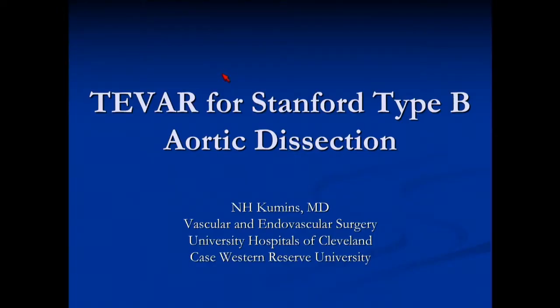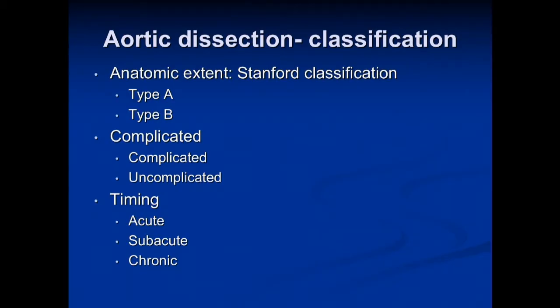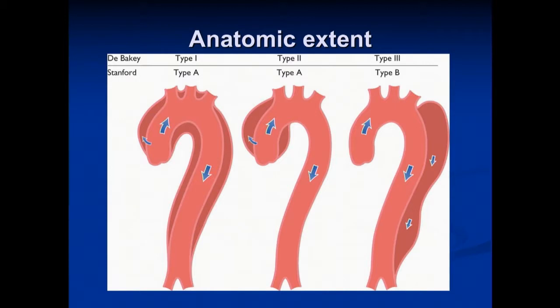This material should all be new. We're going to talk about TEVAR for Stanford Type B aortic dissection. We can classify dissections based on anatomy, whether or not they have complications and their timing. Stanford Type A dissections originate in the aortic arch and are separate from those that originate in the descending thoracic aorta, so-called Stanford Type B dissections.